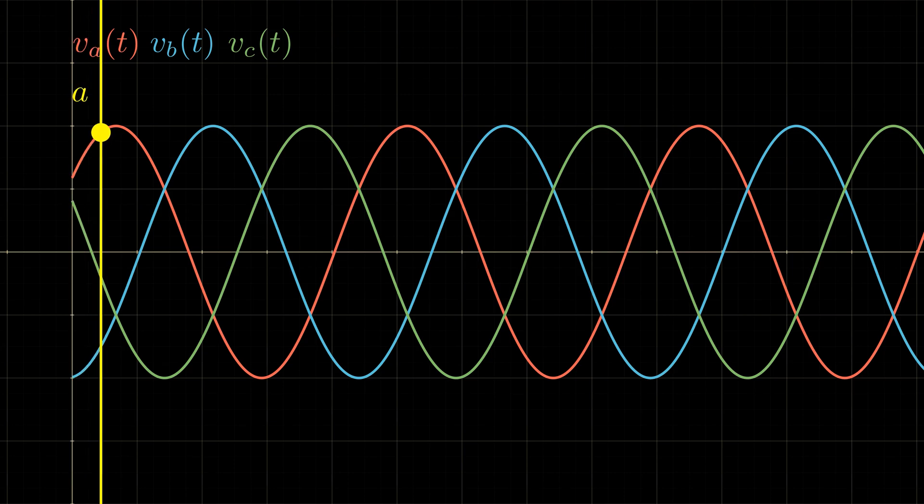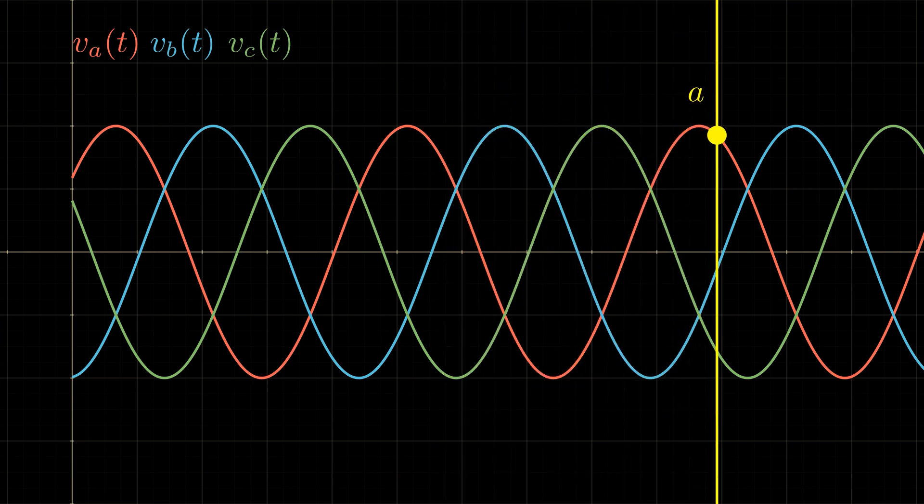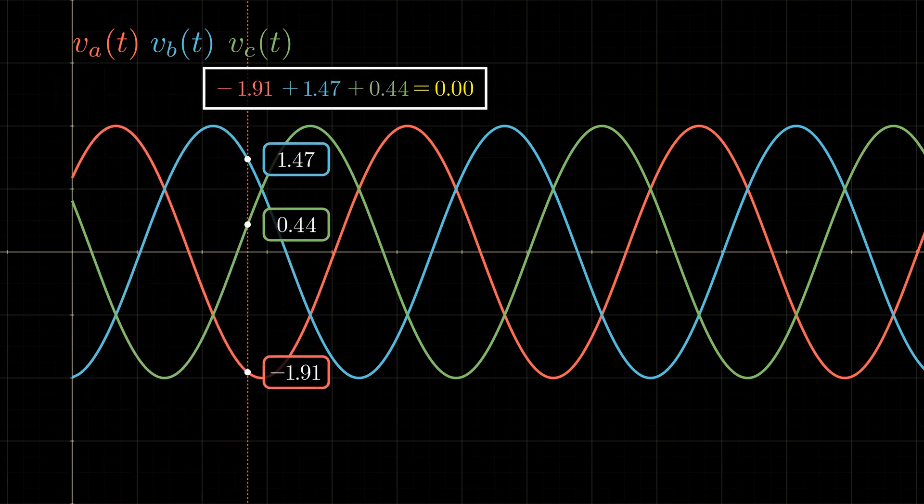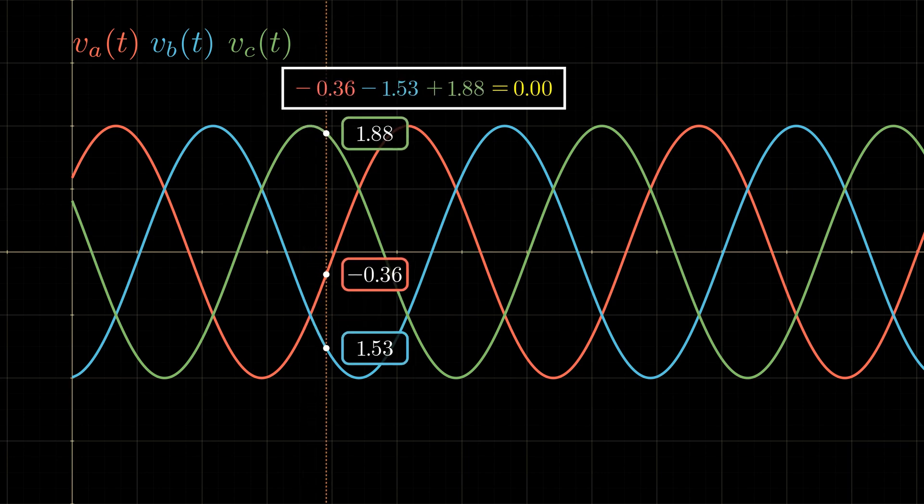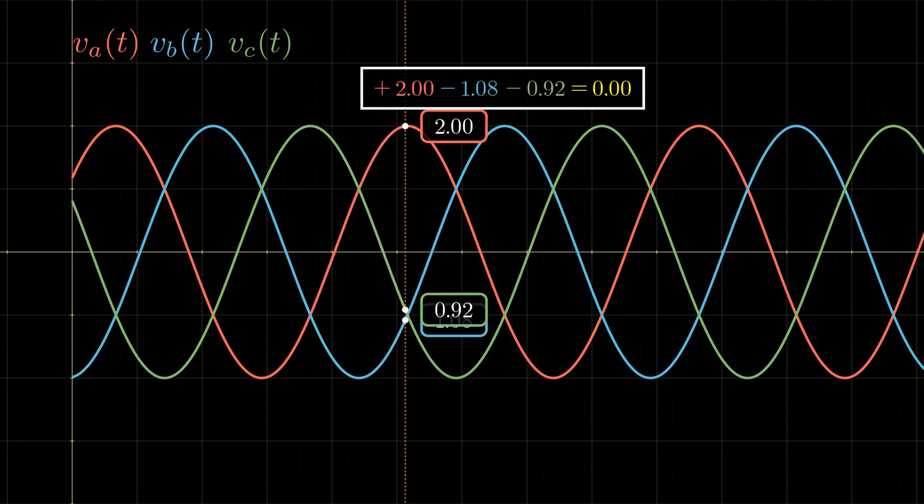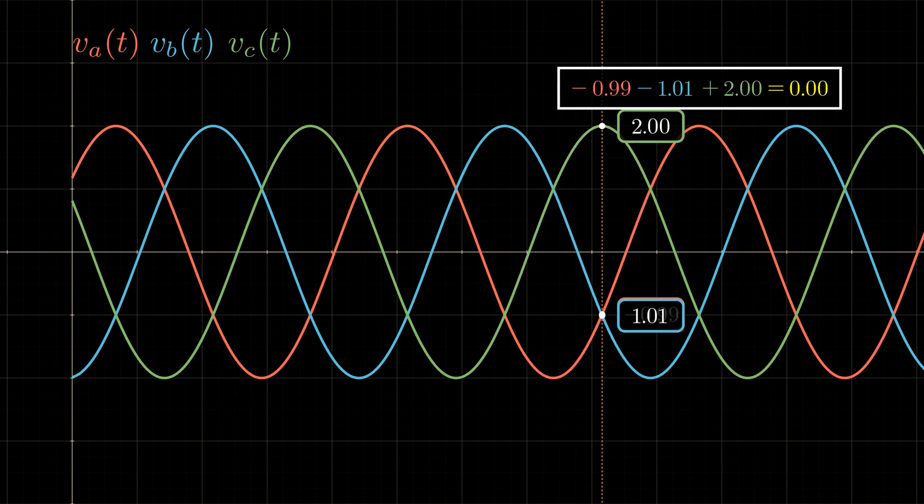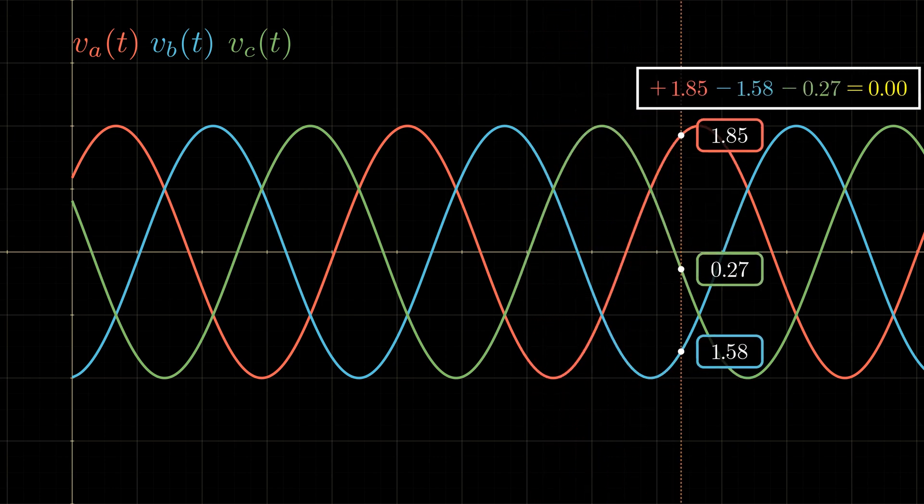In this case, as we scan the waveforms from left to right, we observe phase A, then B, then C, then back to A, B, C again—always in ABC order. The final and most crucial trait of a balanced system is this: at any instant in time, the sum of the three voltages is exactly zero. This is precisely why we don't need a neutral wire in a balanced three-phase system, as long as that balance holds, of course.